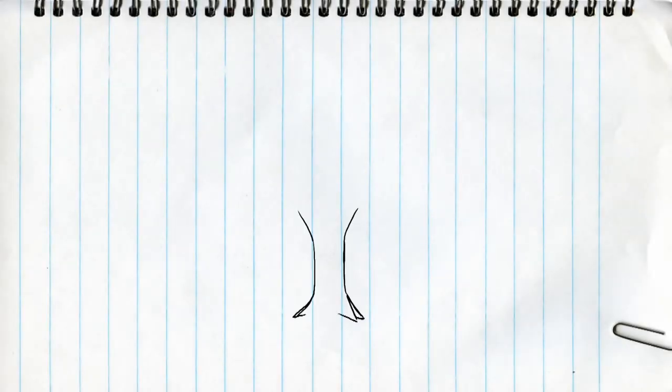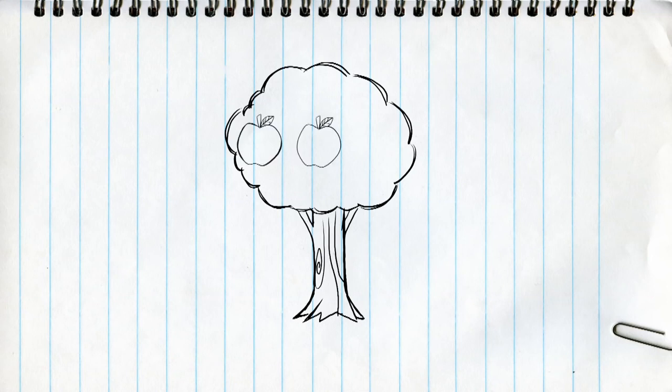What kind of tree is that? Wait, I know. It's an apple tree. How can you tell? Because it's got apples on it.